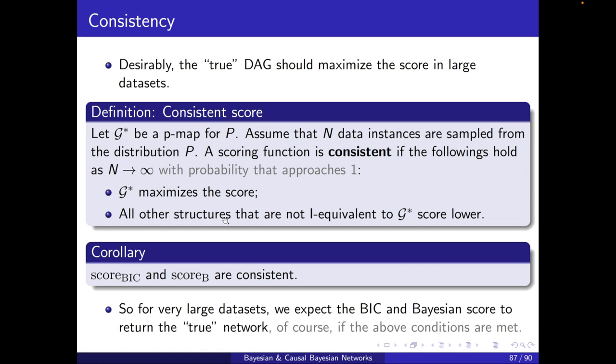Now, corollary, score BIC and score B, the BIC and the Bayesian score, are consistent. That is great. So, it means that for very large data sets, we expect BIC and the Bayesian score to return the true network. Of course, if all the above conditions are met.